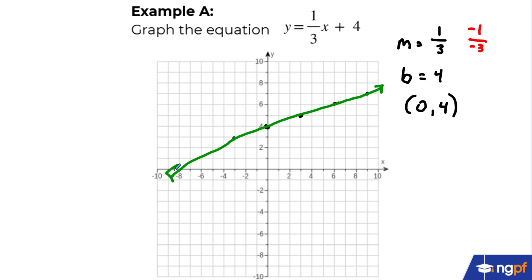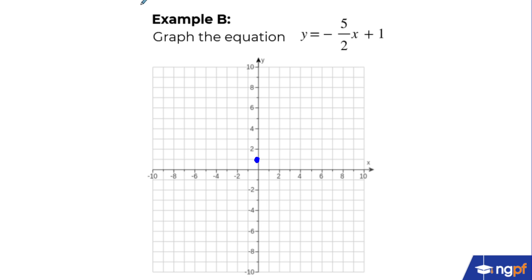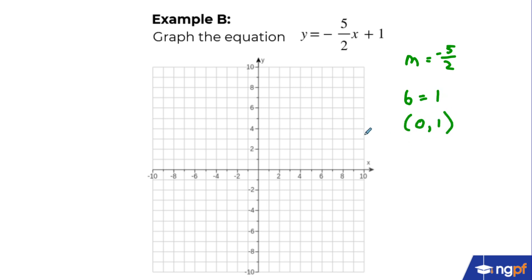To summarize: identify the slope and y-intercept, graph the y-intercept point, then use the slope to move to new points. Now let's look at more examples with different situations. In Example B, the slope is negative 5 over 2, so m equals negative five-halves. The b-value is 1, making the y-intercept the point (0, 1).